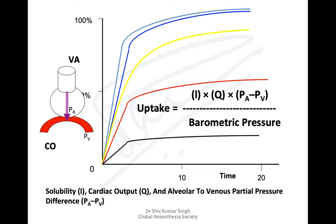This graph shows how various agents are taken up over time — this is also known as the Washington curve for volatile anesthetics. They're delivered through the alveoli, from where they're absorbed into the pulmonary circulation, and then they reach the brain and other tissues.